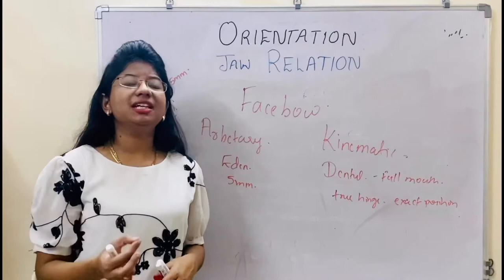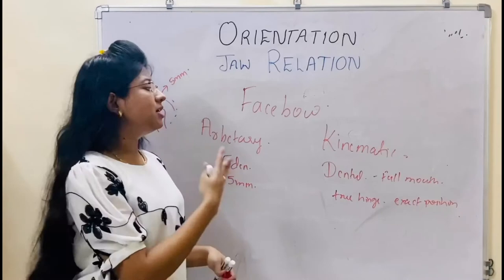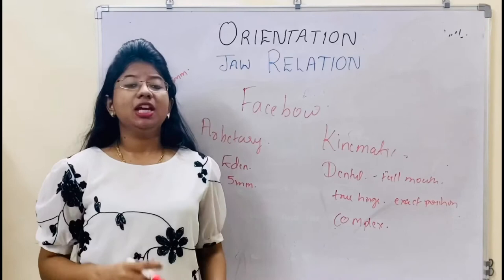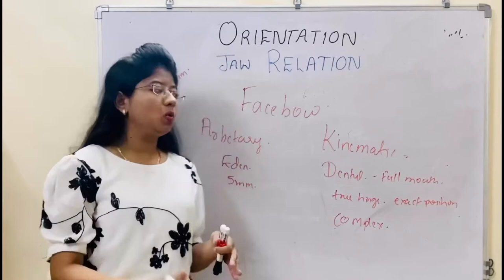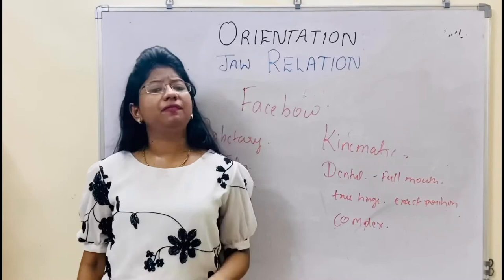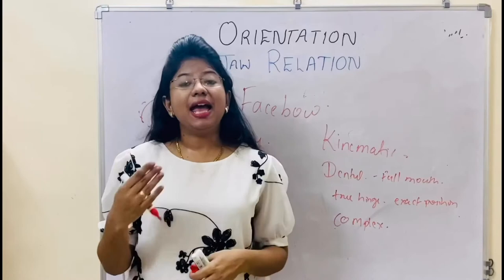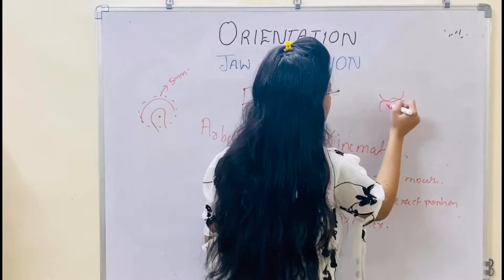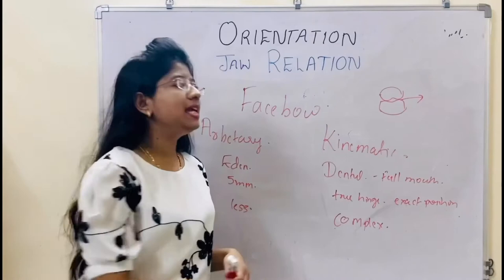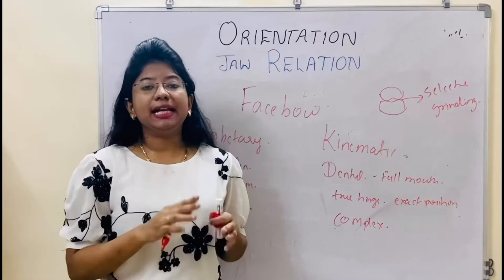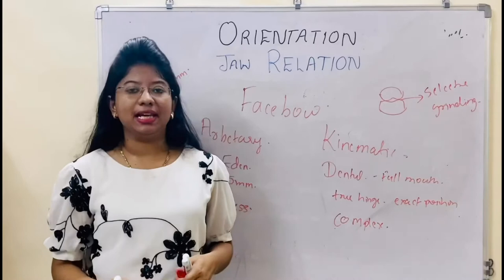Why are we using the arbitrary face bow with edentulous patients and not kinematic? Because kinematic assembly is very complex and time consuming, and patients are more often above 60 years of age. That's why we go for the arbitrary face bow — it is less complex, less time consuming, and more comfortable for the patient. But still there is an error of 5 mm. That 5 mm error is seen in the occlusal contacts — that is, in the teeth. This error is easily correctable by selective grinding, by just reducing the inclined planes to get a correct occlusal relation.